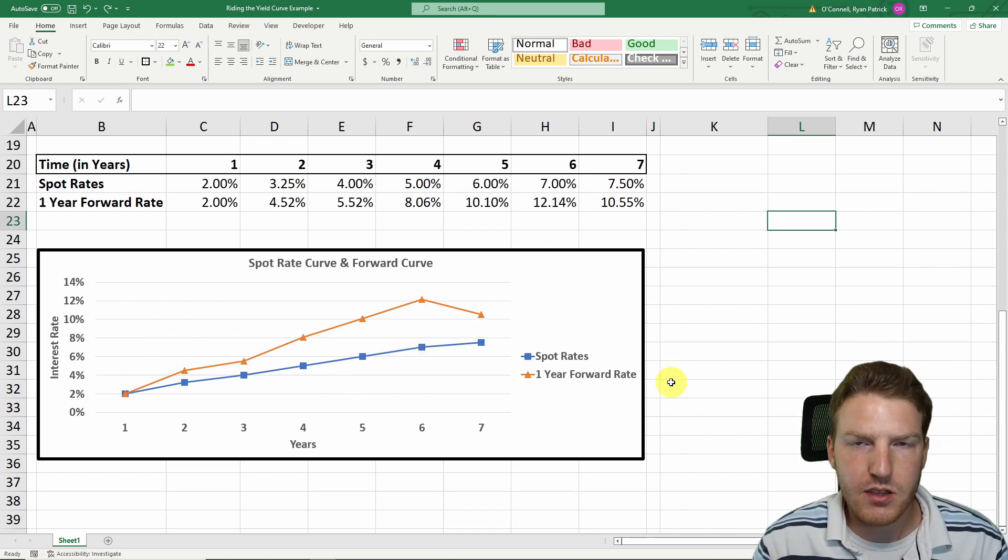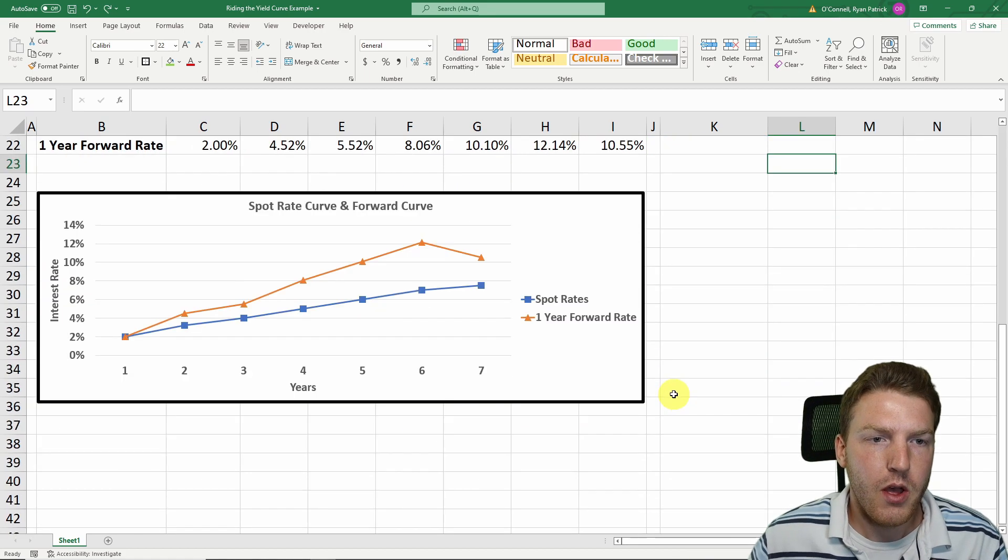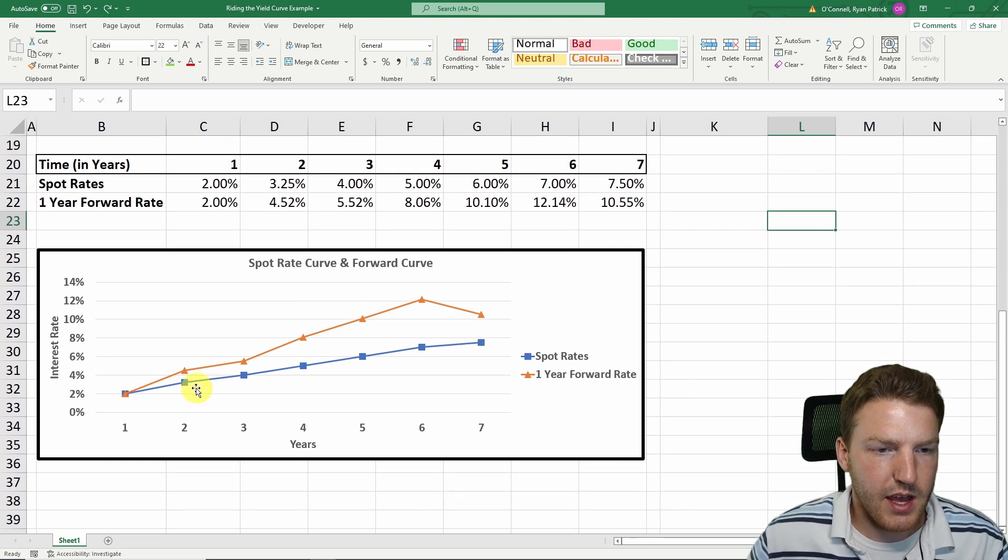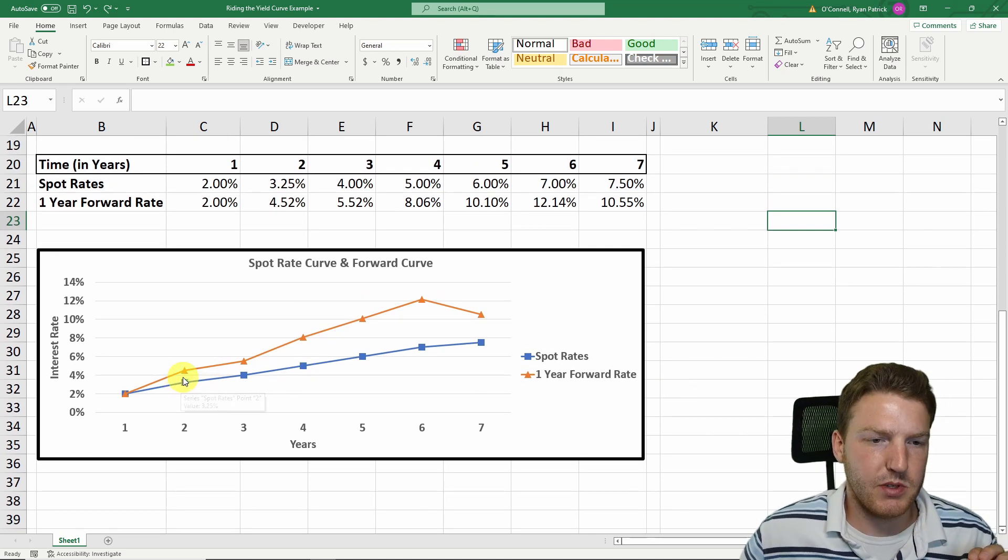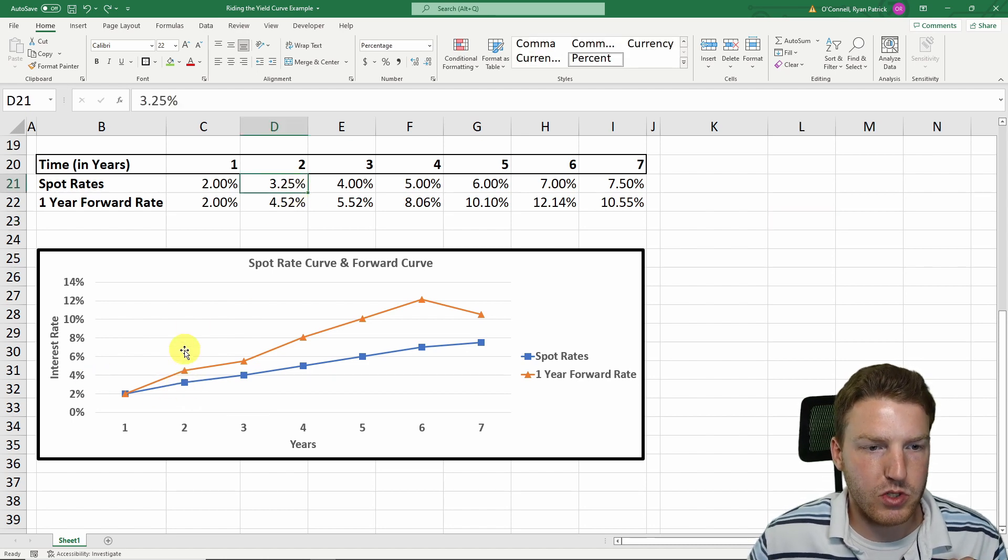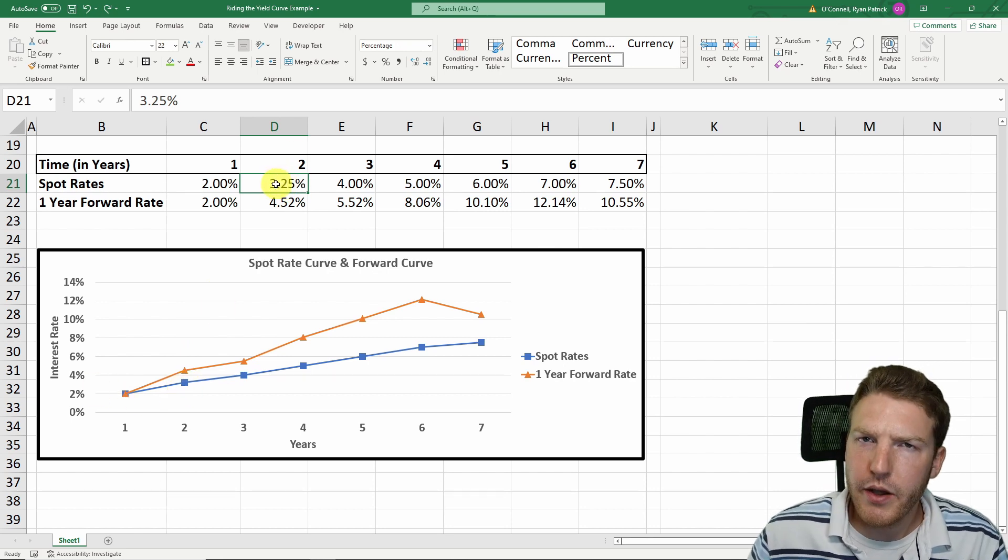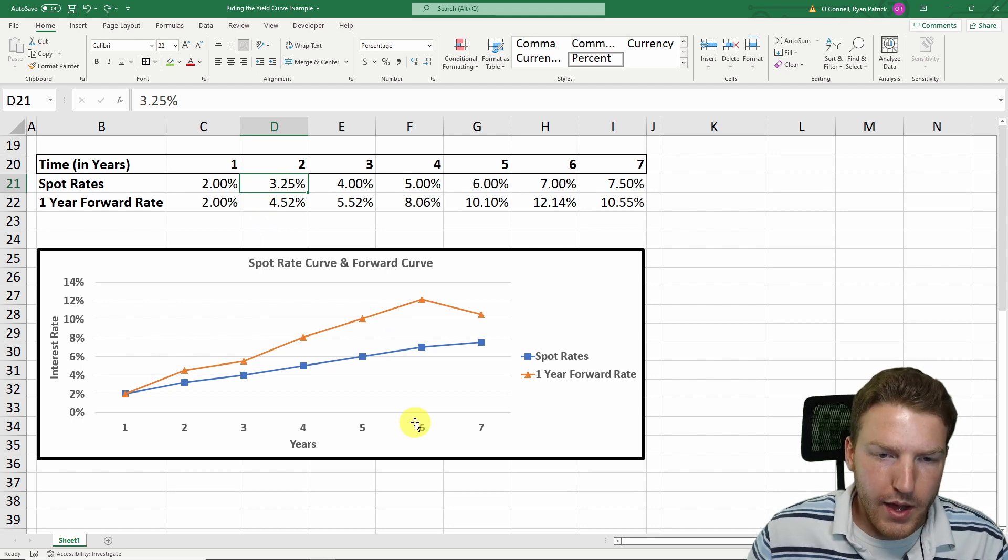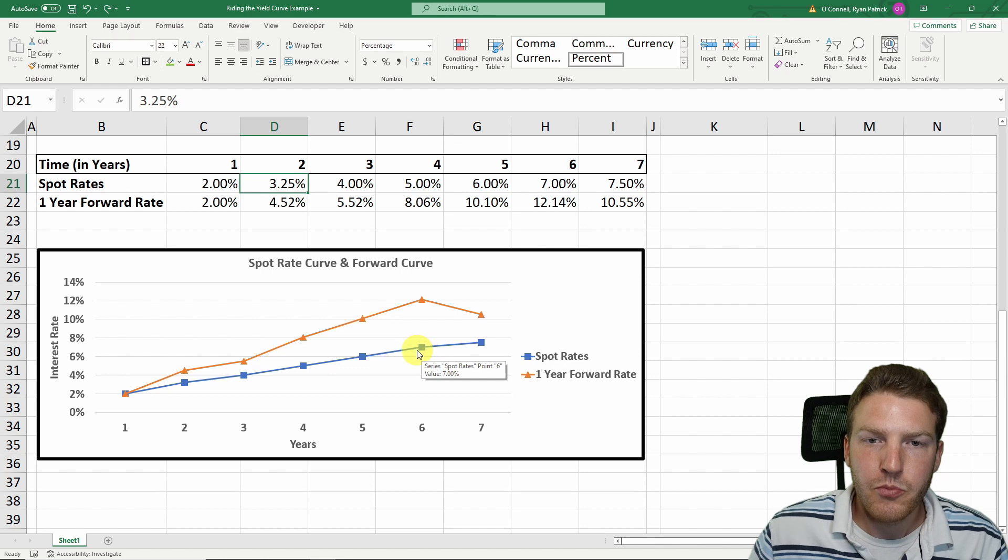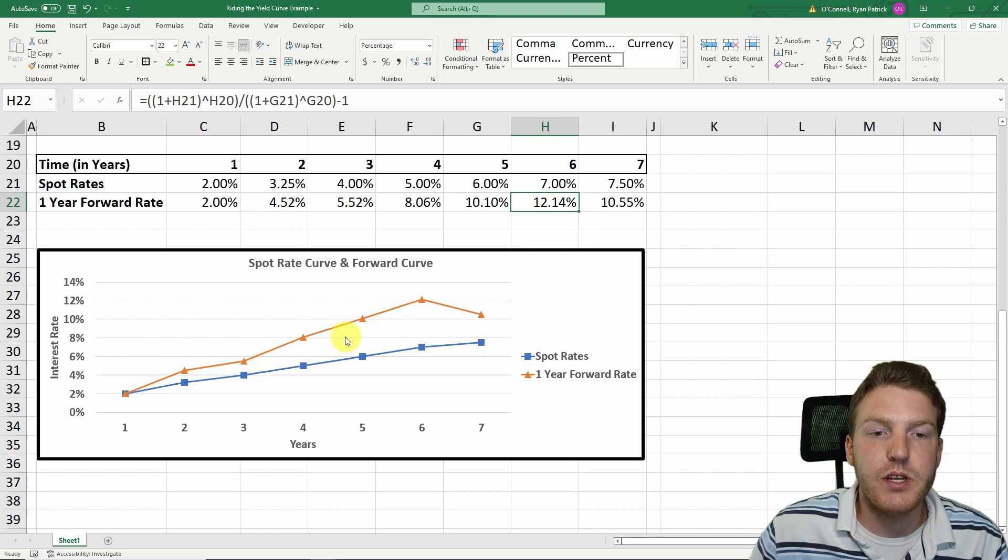What this riding the yield curve strategy really is, I'll explain it conceptually before we get into a few examples. If we had a two-year investment time horizon, one thing we could do is buy a two-year bond at a rate of 3.25% and hold it until it matures. But what if we wanted to get a higher yield? We could go out and buy a six-year bond, and that bond would earn us 7% interest, then hold it for two years, ride the yield curve down, and sell it when it only has four years to maturity.